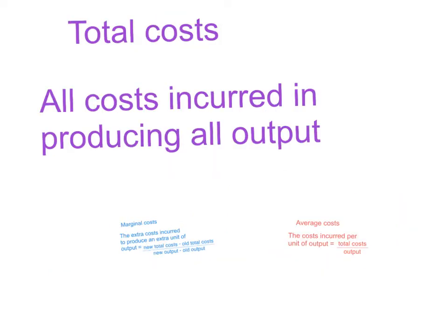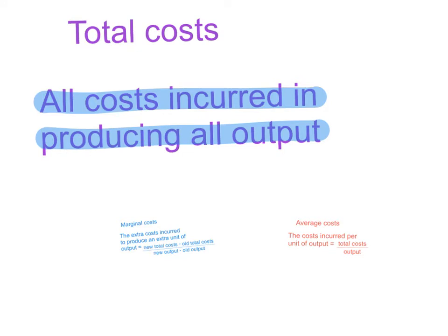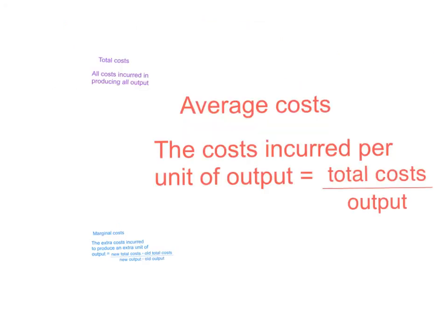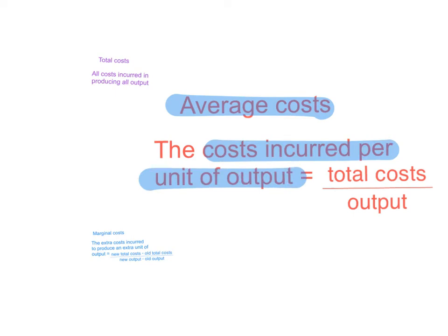Let's quickly define the three concepts. Total cost refers to all the costs incurred in producing all output — total costs equal fixed costs plus variable costs. Average costs are the costs incurred per unit of output, calculated by dividing total costs by output.